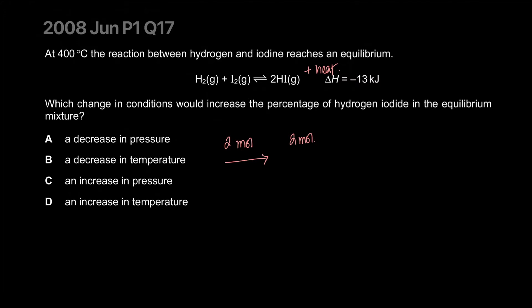So let's just read the question one more time: which change would increase the percentage of hydrogen iodide? Option B — a decrease in temperature — will definitely increase the percentage of hydrogen iodide. An increase in pressure we already discussed. An increase in temperature would do the opposite. The correct answer is B.